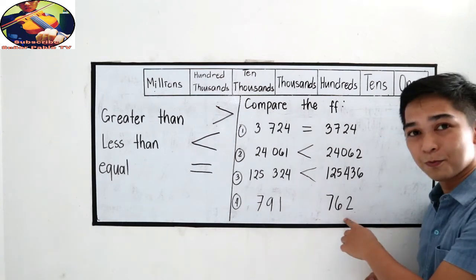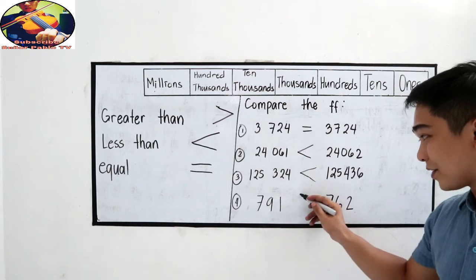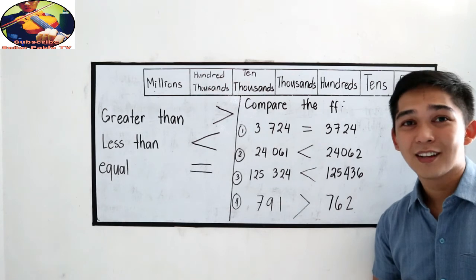791 and 762. Obviously, 791 is greater. So that is how to compare numbers.